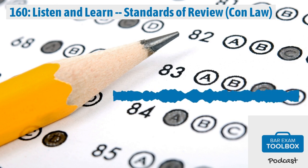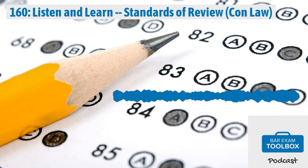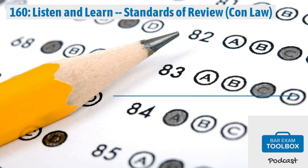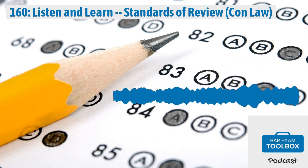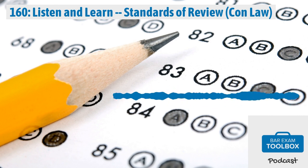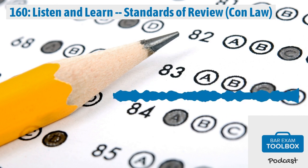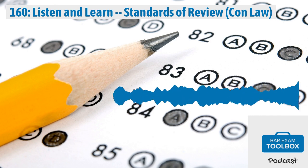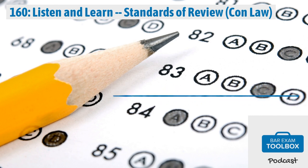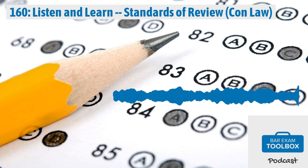Welcome back to the Listen and Learn series from the Bar Exam Toolbox podcast. Today we will be discussing the different standards of review a court will apply when dealing with questions of constitutionality. You may also hear these referred to as levels of scrutiny. Standards of review might seem technical and boring, but they are incredibly important in practice. They tell you how a court is going to approach a question and how much deference they will give Congress, an agency, or the court below.